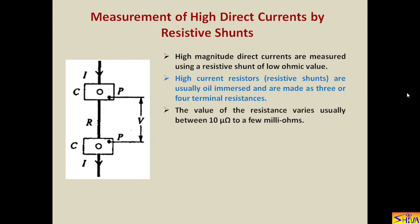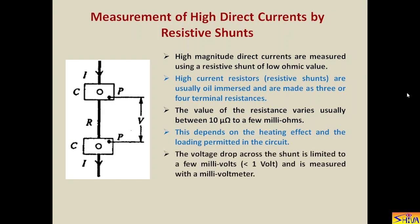The value of the resistance varies usually between 10 micro ohms to a few milli ohms. Because current is very high, we want to limit the heat generated, that is power dissipated. The voltage drop across the shunt is limited to a few millivolts, less than one volt, and it is measured with a millivolt meter. The P terminals are voltage terminals and a millivolt meter is connected between P and P.